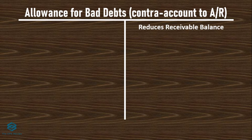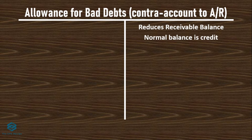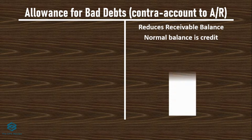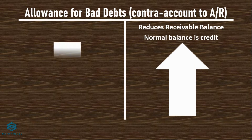Since it reduces an asset account — which has a debit normal balance — the normal balance of the allowance for bad debts is credit. So to increase this account, you should credit it; to decrease it, you should debit it.